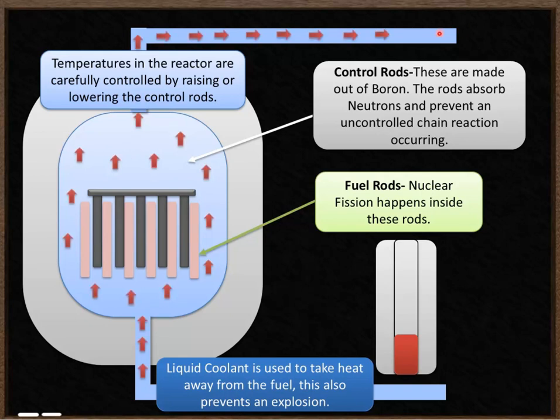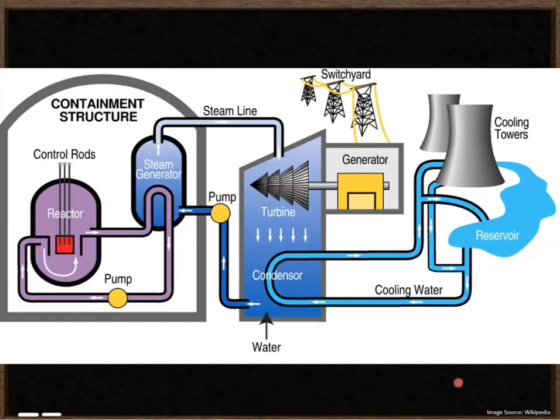The heat energy that's inside the coolant is then used to turn water into steam. That steam is then used to turn a turbine which spins a generator creating electricity as you can see here.